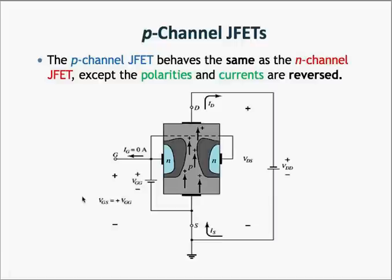So far we have been using the N-channel JFET as our study device. But there is also a P-channel JFET available. The P-channel JFET behaves exactly like the N-channel, except that the polarities and currents are reversed. As the name implies, a P-channel JFET has the channel made from P-type material and the gate is made up of N-type material.